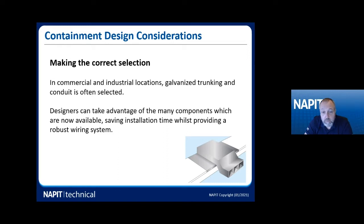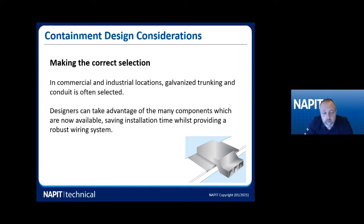How we deal with containment and keep things in order is where the problem starts, because we've then got to pile cables onto tray, basket, conduit, or inside trunking. There's a picture of a crossover T — that's a neat design if you want to take cables out of your trunking, and it helps get around the problem of overfilling trunking. This is relevant to what we're going to talk about next, because grouping has an effect on our cable selection.